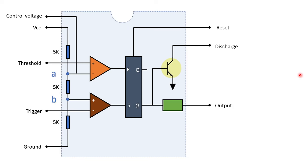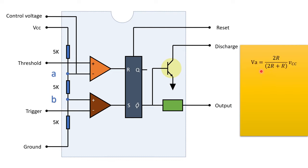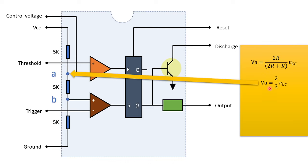By applying the voltage divider rule, we can get voltage at both points A and B. The voltage at point A is 2/3 Vcc and at point B it is 1/3 Vcc.